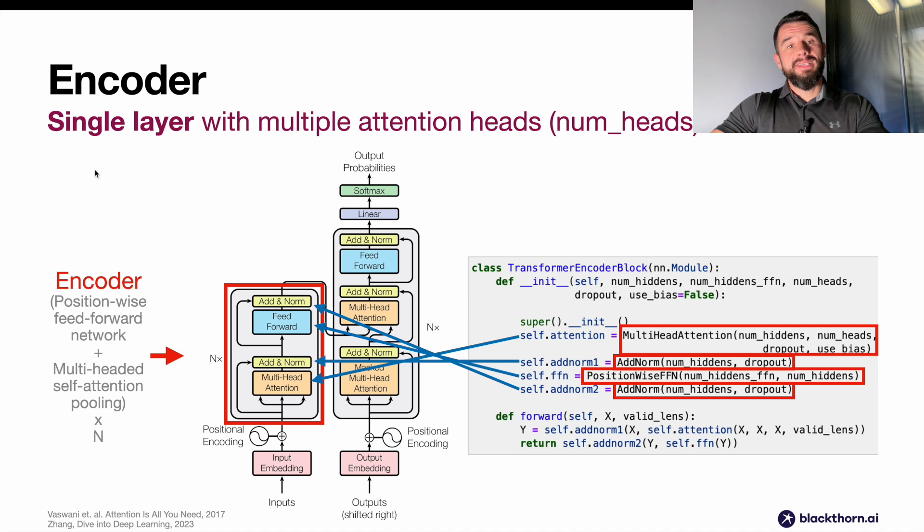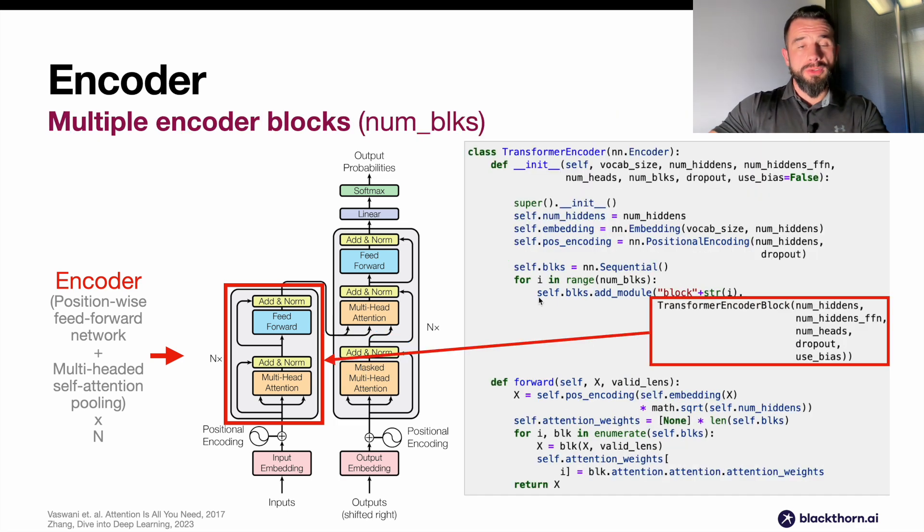Here in front of you, you can see a single layer of a transformer encoder block. This single block contains multiple attention heads, which is a controlled number of heads controlled by parameter num_heads. The transformer encoder block is a class in the code snippet. It's a single chunk of encoder. It contains two sub-layers: multi-headed self-attention, add norm, a normalization layer that we talked about, and position-wise feed-forward network.